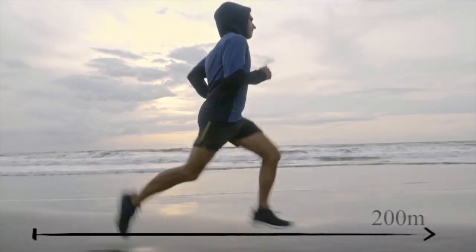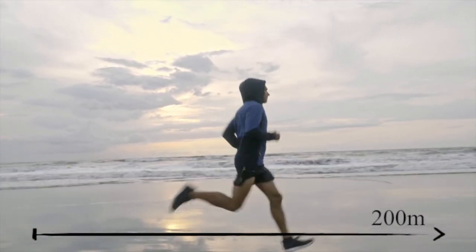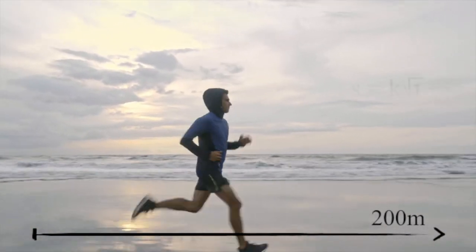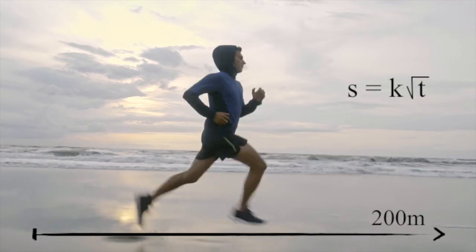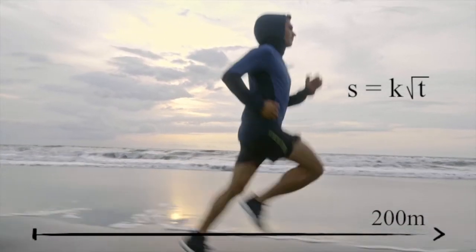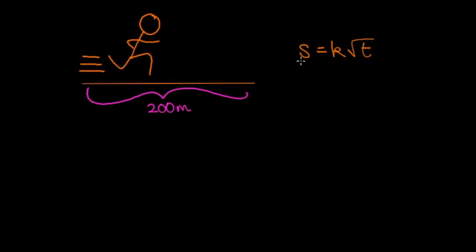Suppose an athlete is running the 200 meters and we want to model his distance using the equation s equals k root t, where s is his distance from the starting position, k is a constant, and t is the time in seconds since he set off.